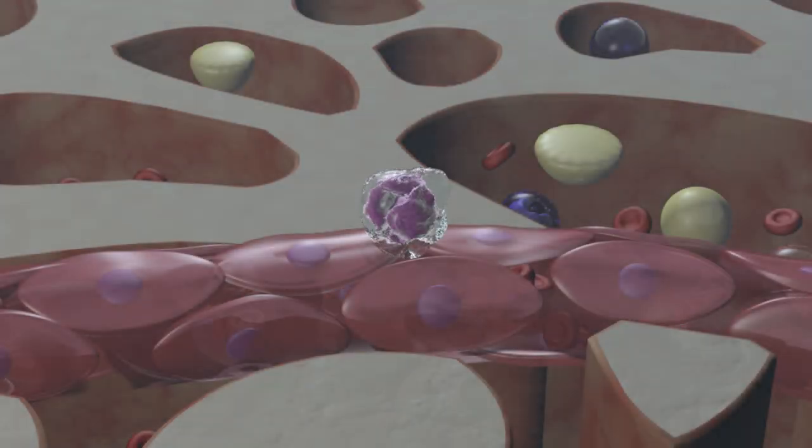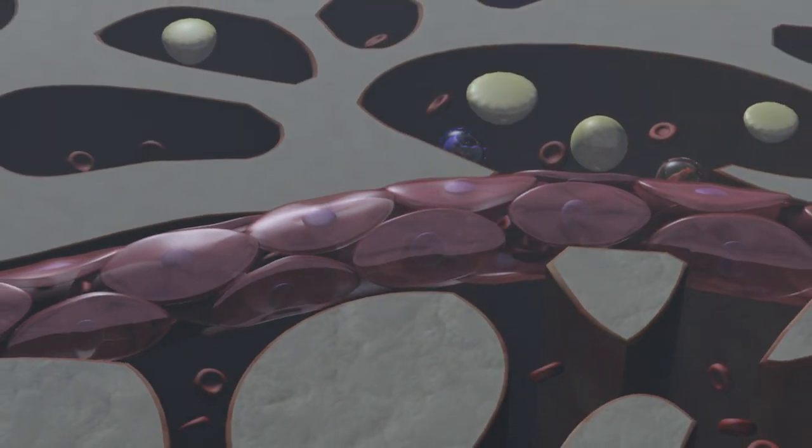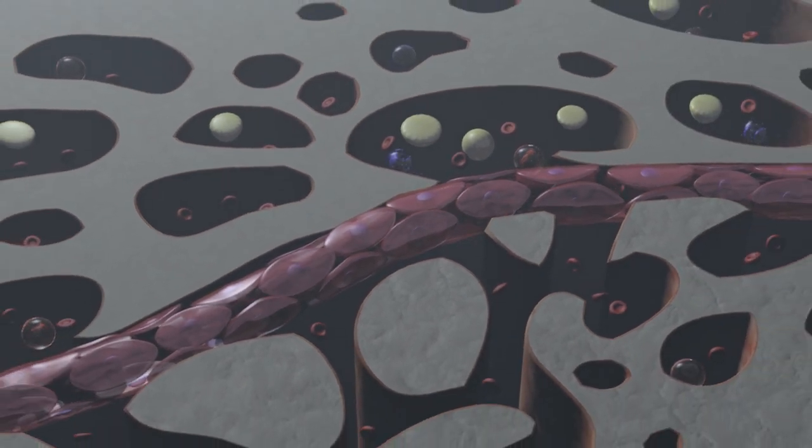After producing an average of 1,000 to 3,000 platelets, the megakaryocyte is now small enough to enter the bloodstream, where it is subsequently consumed by alveolar macrophages.